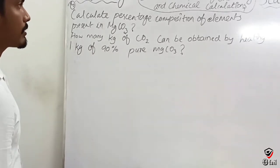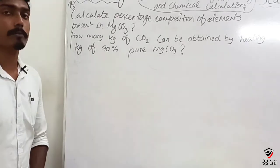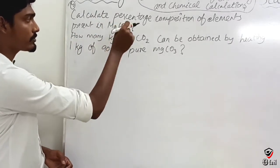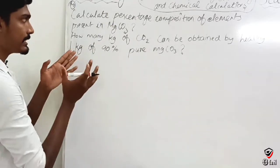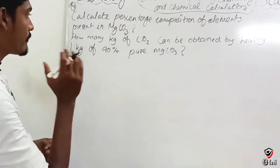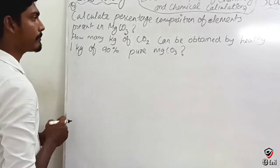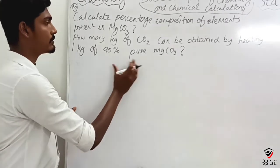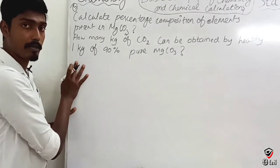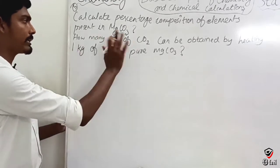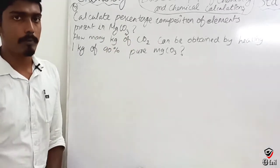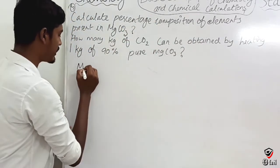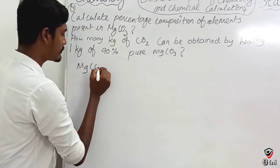Next question: the composition of elements present in magnesium carbonate. Magnesium carbonate contains magnesium, carbon, and oxygen — we need to find the percentage of each element. Also: how many kg of carbon dioxide can be obtained by heating 1 kg of 90% pure magnesium carbonate? Magnesium carbonate is MgCO₃.